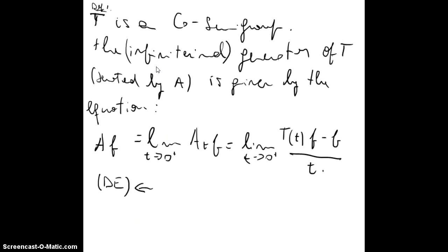Recall the definition of the infinitesimal generator of T — that is T(t)A — given by: A·f is the limit when t goes to 0 plus of A_t·f, that is the limit when t goes to 0 plus of T(t)f minus f, all over t.